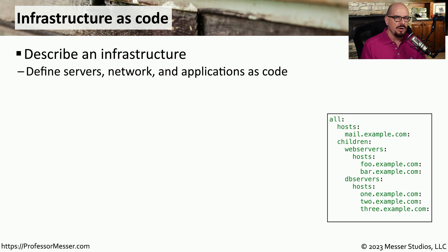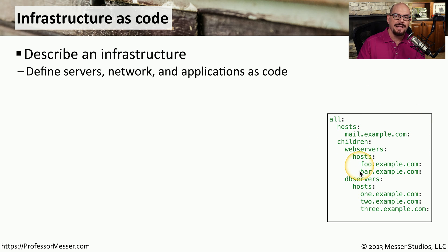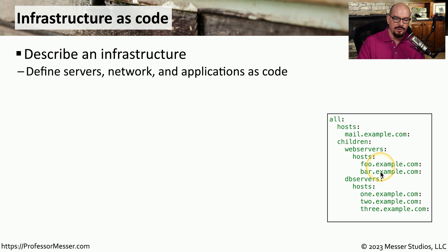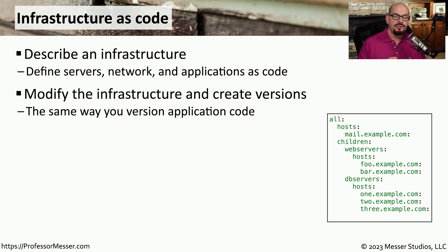Cloud-based infrastructures almost always require some type of infrastructure as code. This is a way to describe an application instance or a portion of the infrastructure in the cloud, but you're defining it as code rather than as a particular piece of hardware. For example, your infrastructure as code may define what hosts need to be built, the type of web servers running on those hosts, and the database servers that would also be used for this infrastructure. This allows you to easily build out and modify the infrastructure as needed.